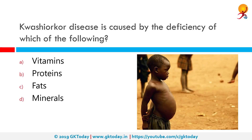Kwashiorkor disease is caused by the deficiency of which of the following? The correct answer is Proteins. Kwashiorkor is a severe form of malnutrition caused by a deficiency in dietary protein. The extreme lack of protein causes an osmotic imbalance in the gastrointestinal system, causing swelling of the gut, diagnosed as edema or retention of water.